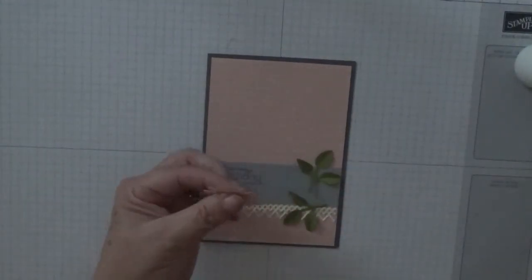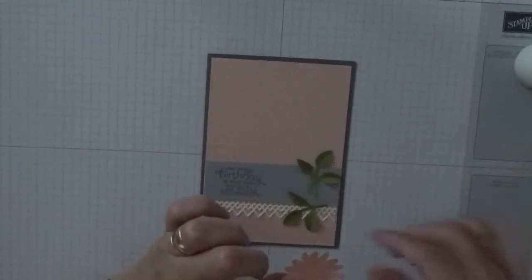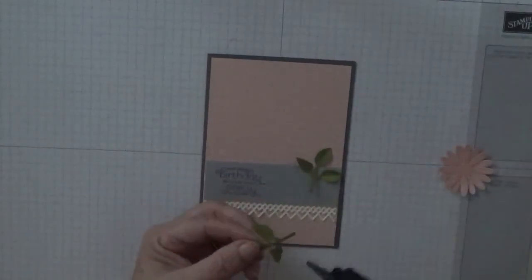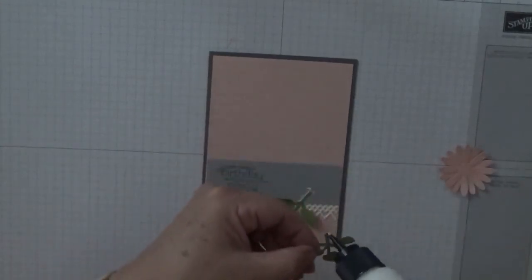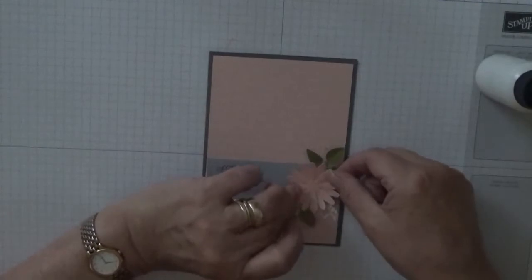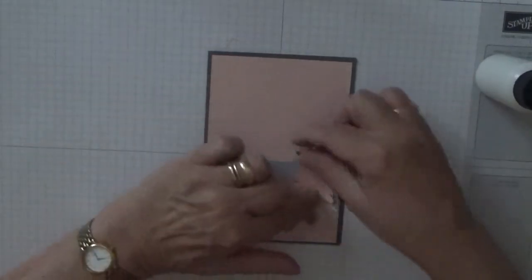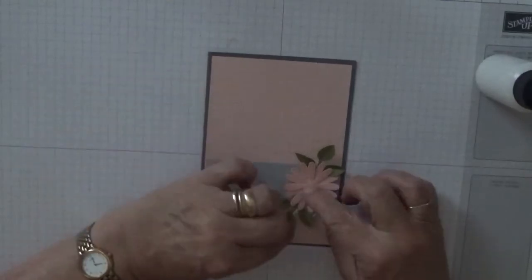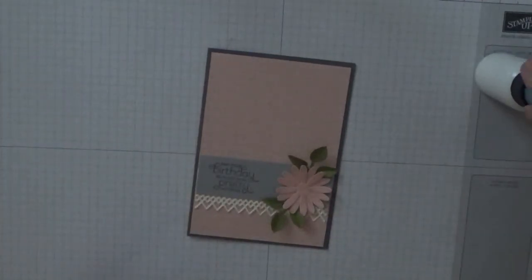But first of all with my bone folder I gently just bent up the daisy petals. I need to be gentle. Pop some glue on the leaves and some glue on the daisy and pop that in the middle.